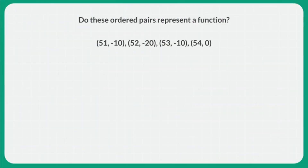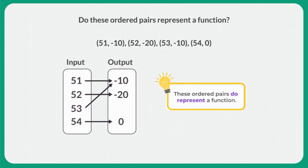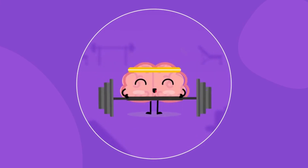On your own, determine if these ordered pairs represent a function. These ordered pairs can be shown on an input-output map like this. As you can see, all 4 inputs each have just one output. It's okay that 51 and 53 share an output of negative 10. So these ordered pairs do represent a function. That's all for now. Thanks for building your math muscles with us.